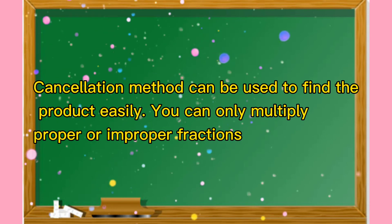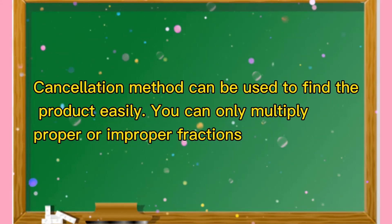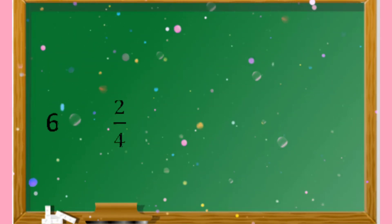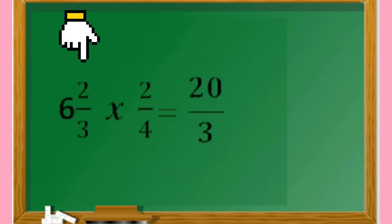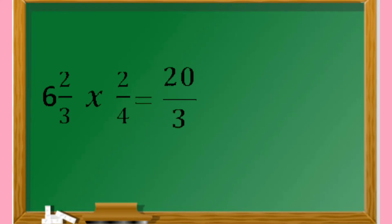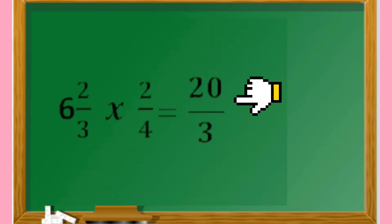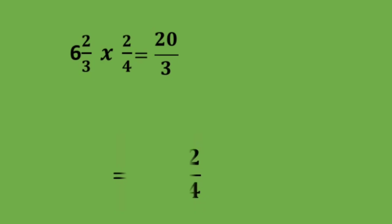Another way to find the product easily is by using the cancellation method. You can only multiply proper or improper fractions, but don't forget to simplify or reduce your answers in its lowest term. By using this method, let's try multiplying mixed numbers by a fraction using cancellation method. For example, six and two-third times two-fourth. The first thing to do is to rename the mixed numbers as a proper fractions. So our mixed number here is six and two-third. So we are going to multiply the whole number with the denominator three. So we have six times three is equals to eighteen, and add the numerator two. So a total of twenty. And copy the denominator of three.